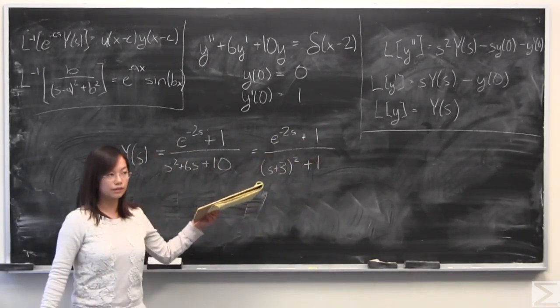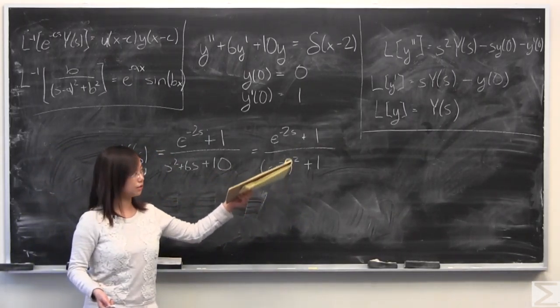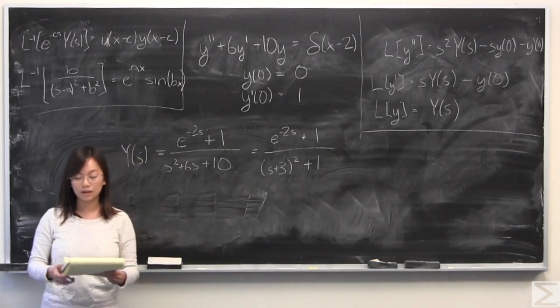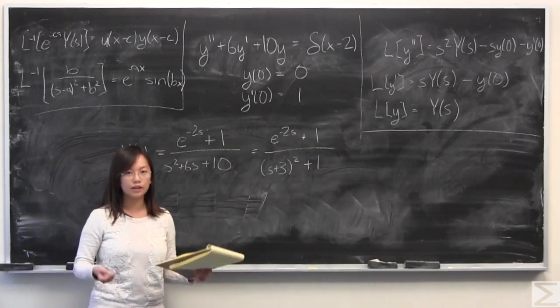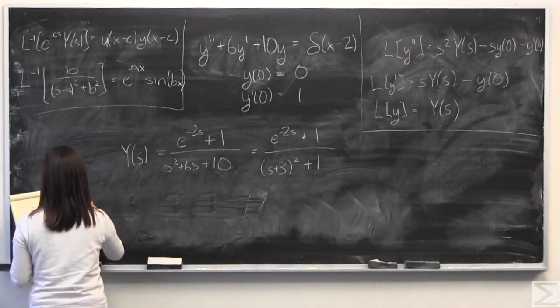That is indeed a perfect square of s plus 3, quantity squared. And then I'm going to separate this into these two parts based on the numerator, and you'll see why. It makes it a lot easier to finish solving this with Laplace transforms.